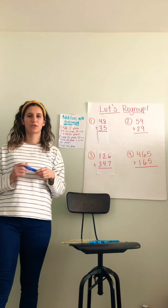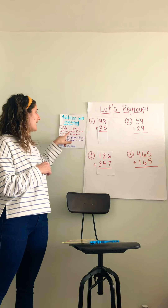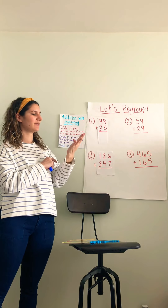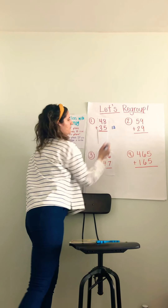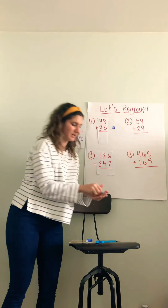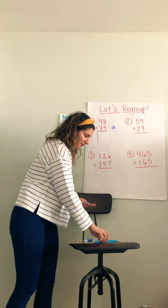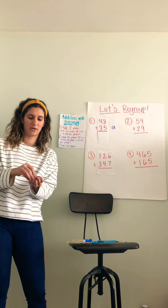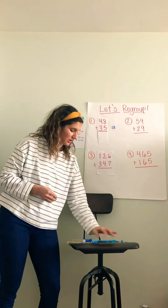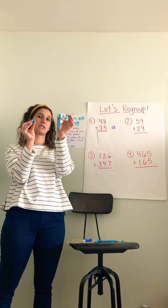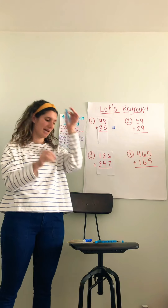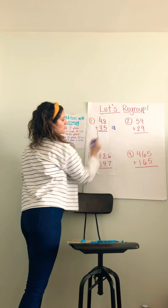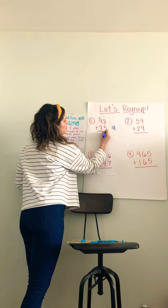Our first problem is 48 plus 35. My first step is to add our ones place — eight plus five. I like to start with my big number and count on five more: eight, nine, ten, eleven, twelve, thirteen. Think about that in terms of base 10 blocks — if I have eight base 10 blocks and I have five here, when I put them together we make 13. But 13 is the same thing as trading in 10 of the ones for a ten, and then I still have my three ones left over. So I need to make sure my ten makes it into the tens place, and those three leftover ones become the answer for my ones place.